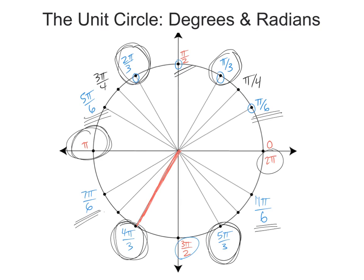5 pi over 4 is down in the third quadrant. 6 pi over 4 we've already simplified as 3 pi over 2. And 7 pi over 4 in quadrant 4 and 8 pi over 4.